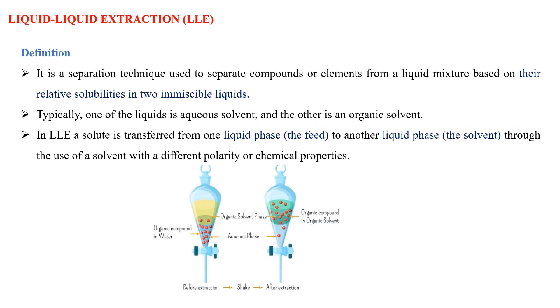In this video we are going to discuss liquid-liquid extraction. Liquid-liquid extraction means one liquid contains a mixture of components, called the liquid mixture. From this mixture, which has more than one component, we have to isolate or extract a single component by using another liquid. This is called liquid-liquid extraction — the separation of a component from a liquid by using another liquid. Two immiscible liquids are used in this process.